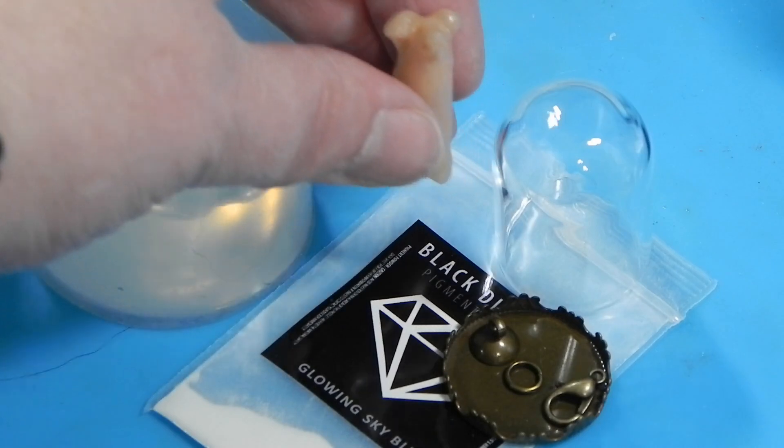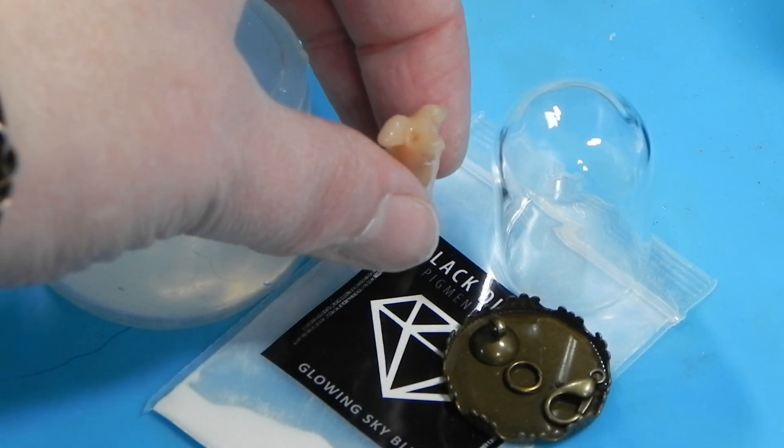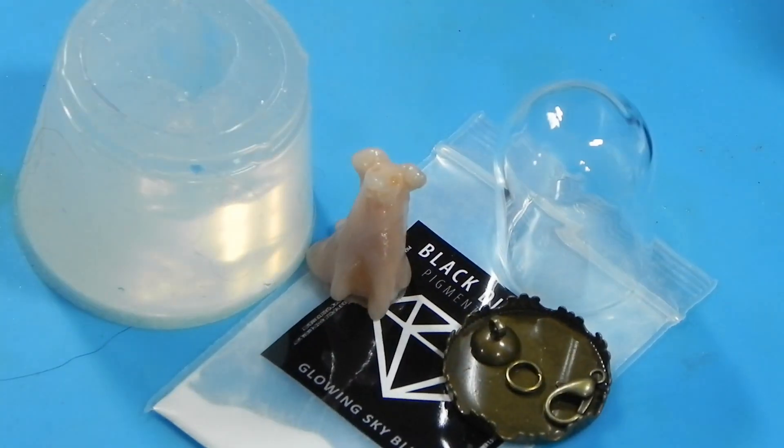I started with a cute little sculpt that I made myself out of oven-baked clay, and I cast the mold for it.